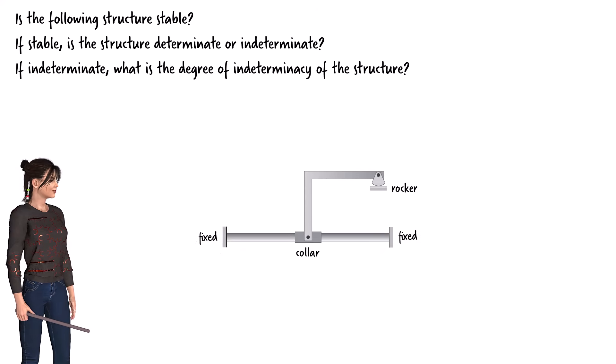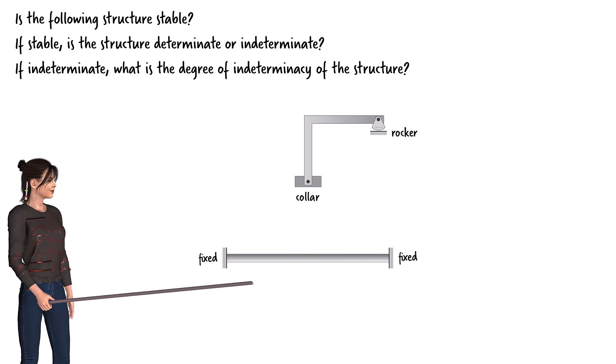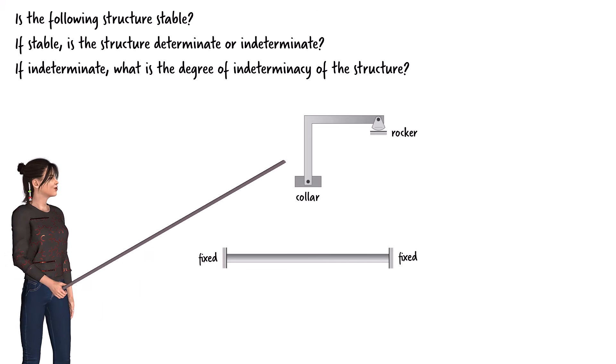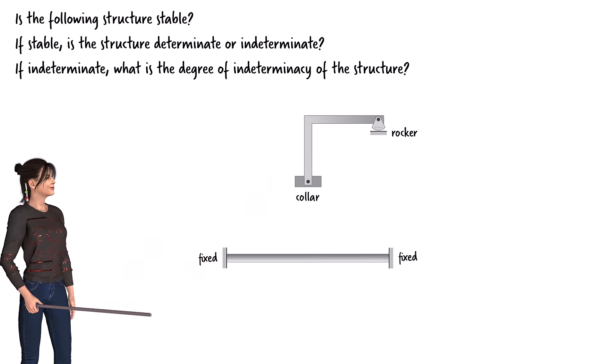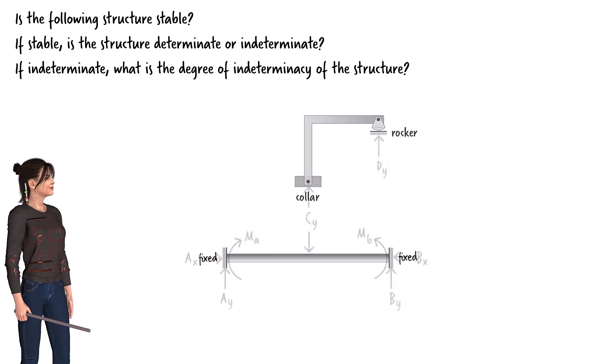To arrive at a definitive conclusion, we also need to examine any part of the structure that we might suspect could be unstable. In this case, we can divide the structure into two parts: a beam that is fixed at both ends and a frame that rests on the rocker and the collar. Let's draw the free-body diagram for each segment.